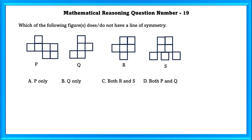Mathematical reasoning question number 19. Which of the following figures does not have a line of symmetry? P does not have a line of symmetry. Q does not have a line of symmetry. R also does not have a line of symmetry, but S has a line of symmetry. Since they asked which figure does not have a line of symmetry, we cannot mark C because S has a line of symmetry. So the answer is option D: P and Q.